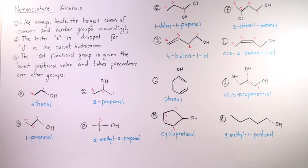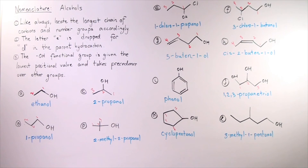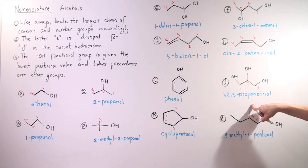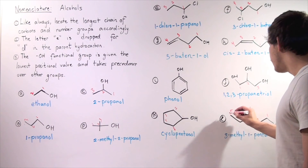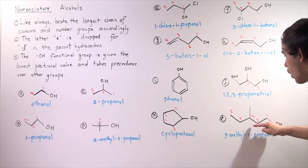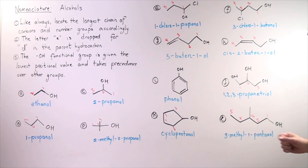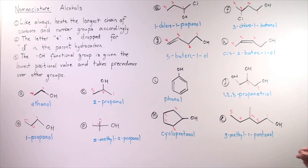Finally, the last example: where do we begin? We begin on this end because we're trying to minimize the OH value. So: one, two, three — then going up — four, five. We have a five-carbon chain, so we have pentanol. On the third carbon, we have a methyl group. So the name is 3-methyl-1-pentanol, where the one simply means our hydroxy is on the first carbon.